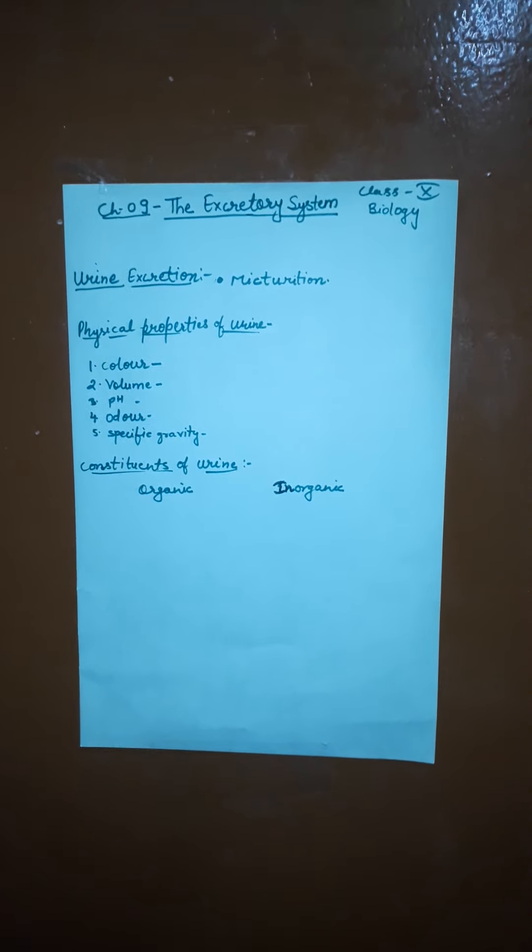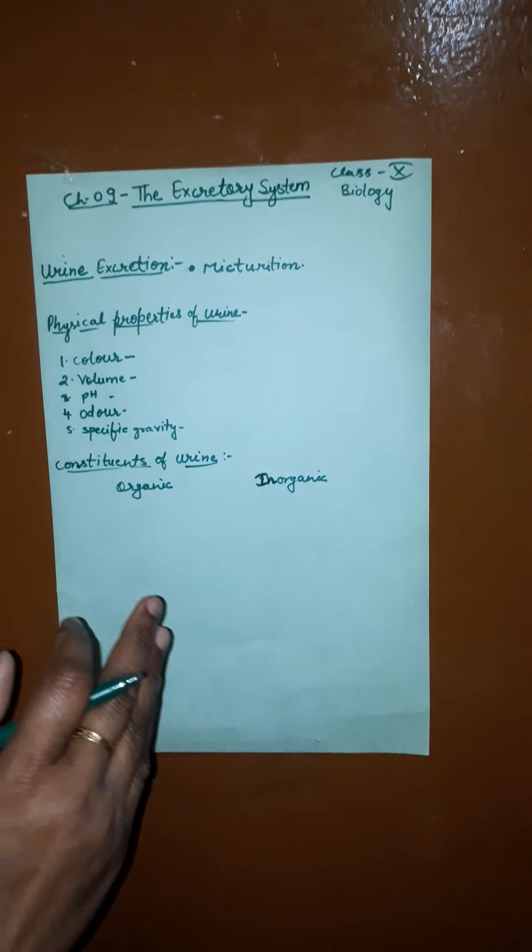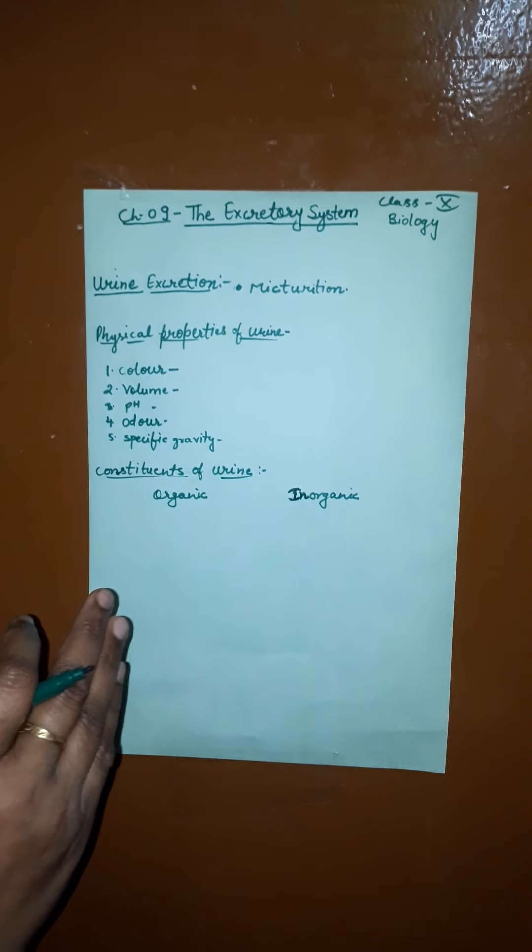What is urine excretion? The final urine passes into the collecting duct, to the pelvis, and through the ureter into the urinary bladder by peristalsis. Peristalsis is a type of wave of contraction in the ureters, and also due to gravity.